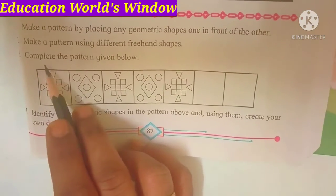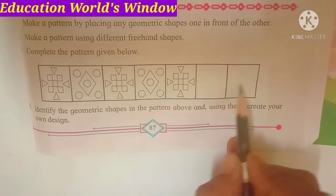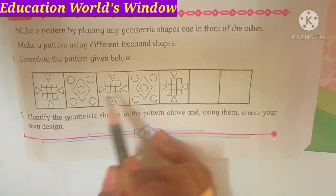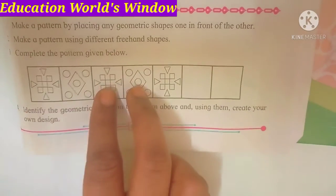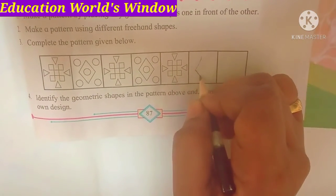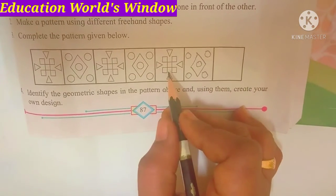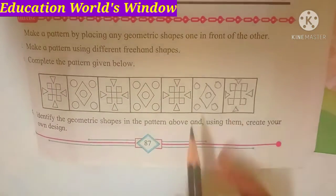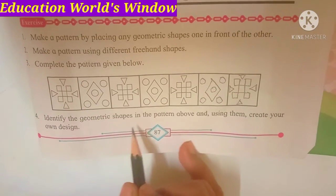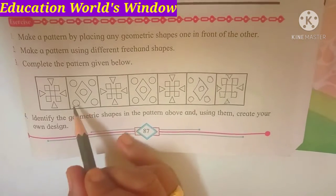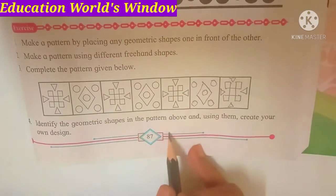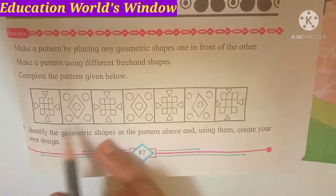The next question is: complete the pattern. Complete observation — first, second, second, second, third, third, fourth, fourth. The first question is to identify the geometric shapes in the pattern and using them create your own design. There is a pattern in this pattern — which shapes are made of geometric shapes.